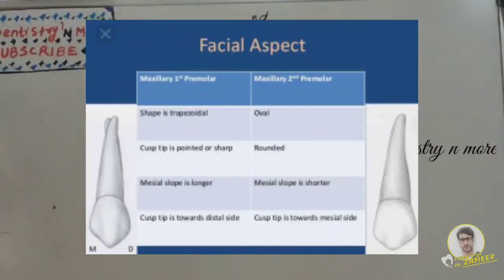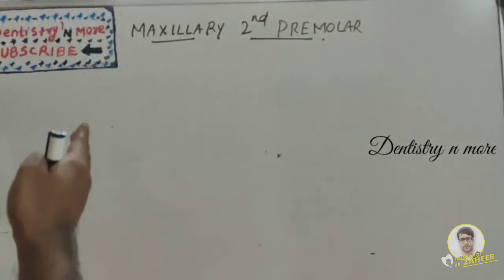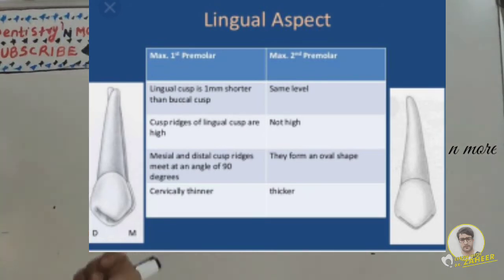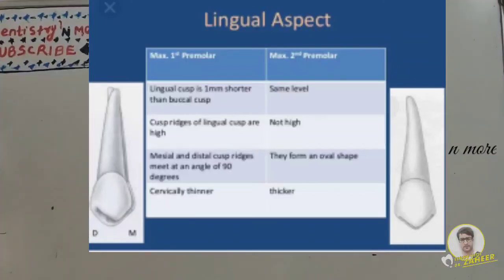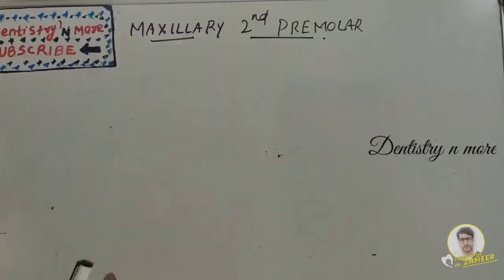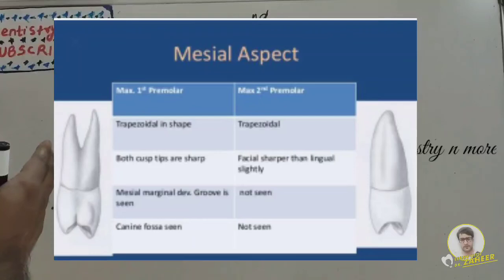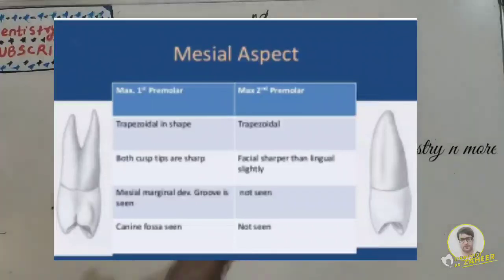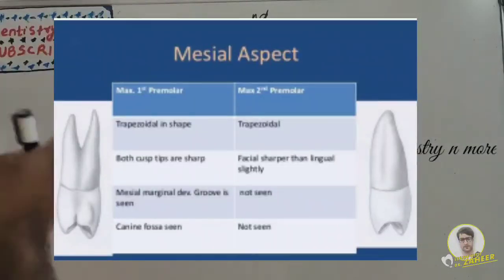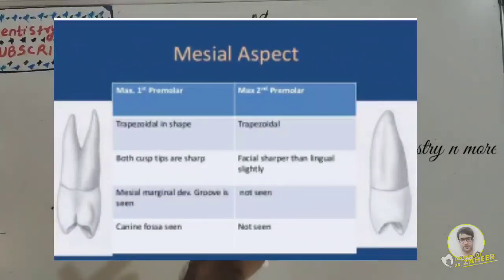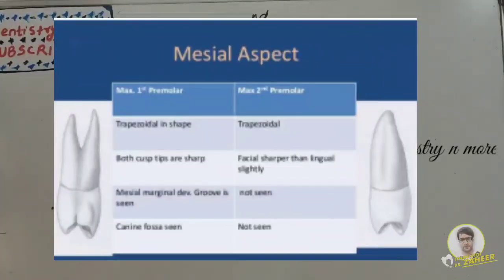From the lingual aspect: the first premolar lingual cusp is 1 mm shorter than the buccal, whereas on the second premolar it is the same length. The lingual cusp is sharp on both. On the mesial aspect: the first premolar has a canine fossa and a mesial marginal developmental groove, whereas the second premolar is smooth and convex with no depression. Regarding the root, the first premolar has bifurcation at mid-root while the second premolar has only a single broad root; there is a developmental depression in both cases.